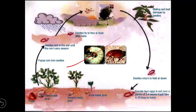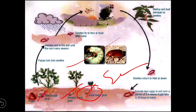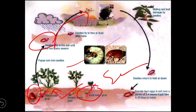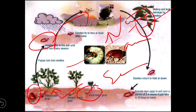The white grub belongs to family Scarabaeidae, order Coleoptera. The first, second, and third instar larvae stay inside the soil near the root region, feeding on roots and rootlets. Pupation also occurs in the soil. The pupa turns into a beetle inside the soil, then after rain the beetles fly toward neem or acacia trees, where they mate and feed on leaves, then return to the soil to lay eggs.